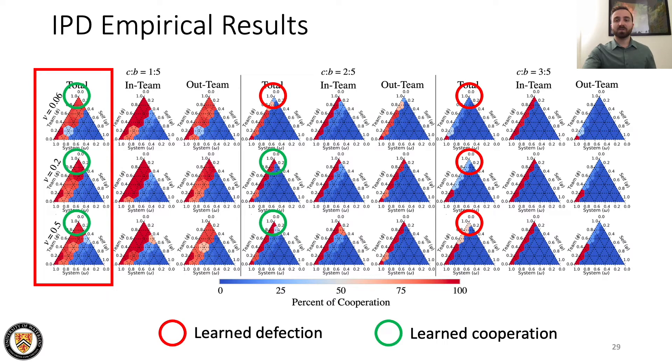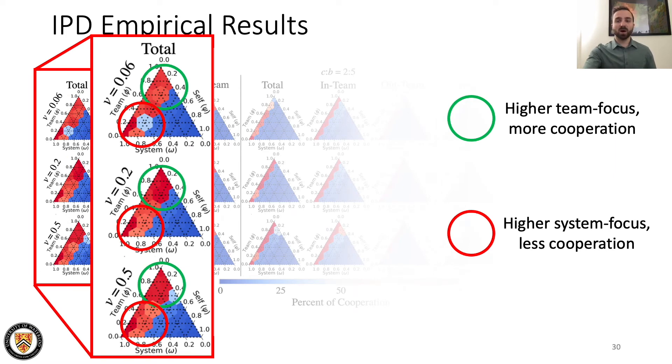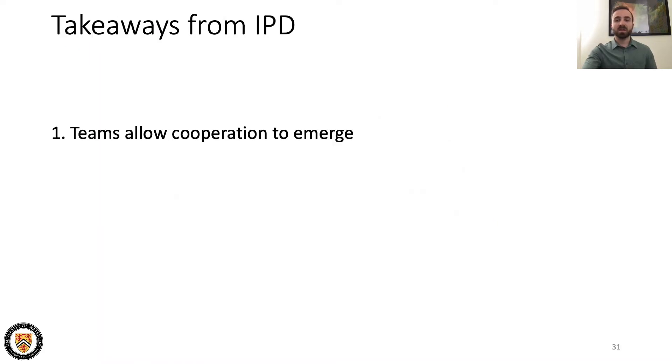Now, let's take a further look at this case when the cost is one. Here, we also observe that cooperation emerges despite some level of selfishness, and this cooperation is stronger when offset with high team focus as opposed to high system focus. The main takeaways here are that teams allow cooperation to emerge despite the theoretical incentive to defect, and this cooperation is actually more robust to some selfishness.